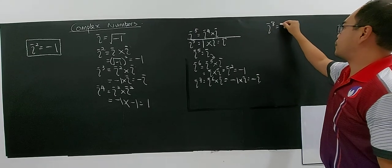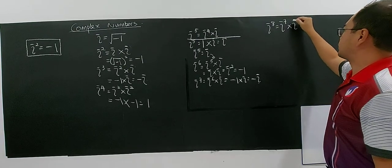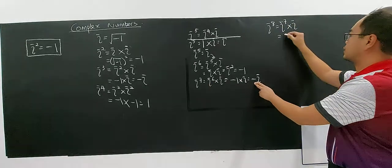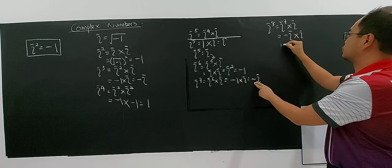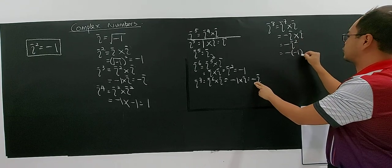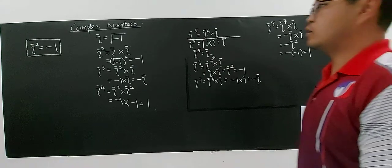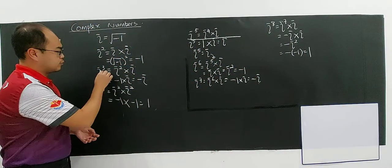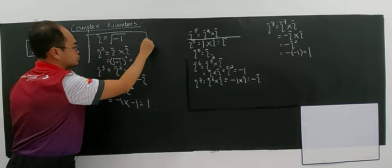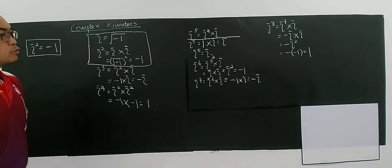For i power eight, you can work it out yourself. i power nine: i power seven multiplied by i — i power seven is negative i, multiplied by i gives negative i squared. i squared is negative one, so negative times negative one gives you one. It keeps repeating. The most important thing is to understand how to work with i, but you must remember the first two: i equals square root of negative one and i squared equals negative one. If you remember these two you can generate the others.